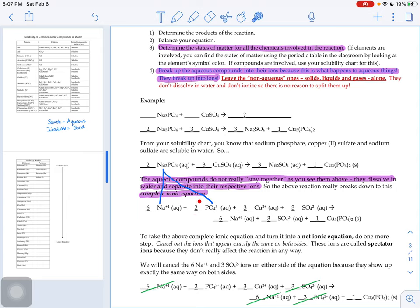Now, what about these numbers, the six and the two? The six comes from how many sodium ions are there. We have this big two out front with this little three, a total of six.